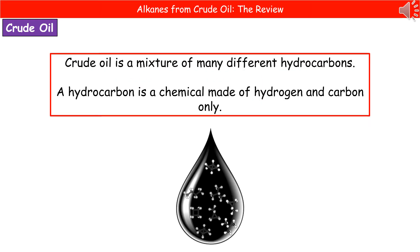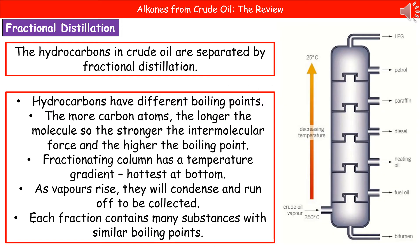When we consider what crude oil is made of, it's actually a mixture of many different hydrocarbons. A hydrocarbon is a chemical made of hydrogen and carbon only. So our crude oil has these hydrocarbons of all different lengths. While crude oil is this mixture of different hydrocarbons, it's not overly useful to us. To make it useful, we've got to split it into its individual fractions, and the way we do that is through a process called fractional distillation.